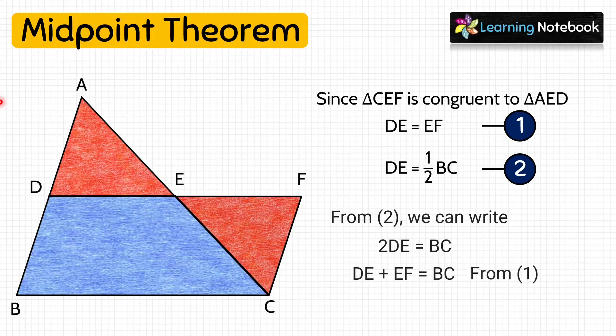Now look at the triangle here. DE plus EF equals to DF. So we get DF equals to BC. Let's mark it as 3.